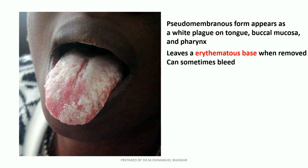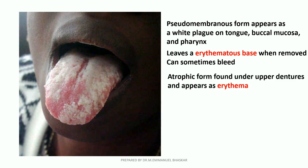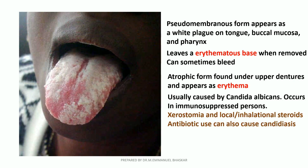Most often, when this white plaque is removed, it leaves an erythematous base which can sometimes bleed. The other form of oral candidiasis, which is the atrophic form, is difficult to diagnose since it just appears as an erythema under the upper dentures.